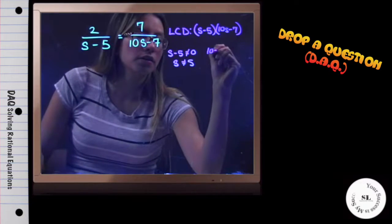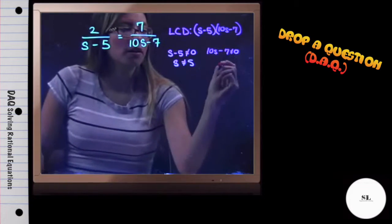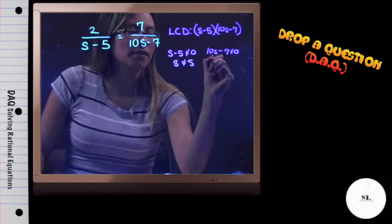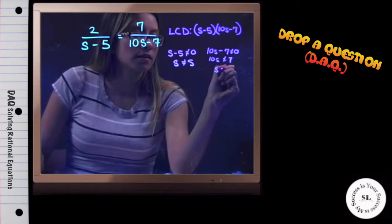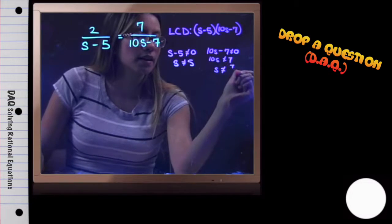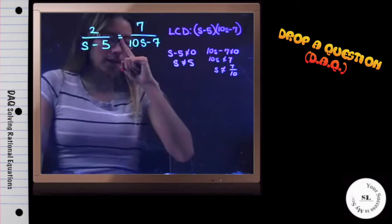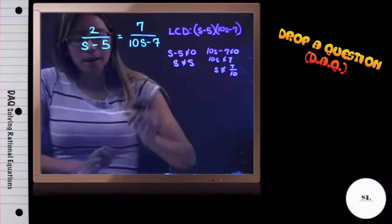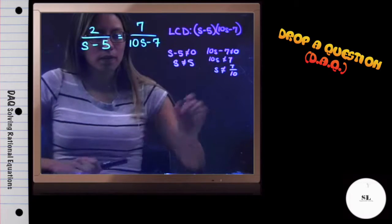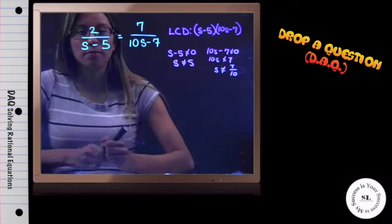For the other fraction, 10s minus 7 is not equal to 0. When solving for this, I need to add 7 on the other side and then divide by 10. I have that s cannot be equal to 7 over 10. When I solve for this, I am going to just keep in mind to check my answers and make sure that they are not this. If they are, I cannot include that within my final answer.